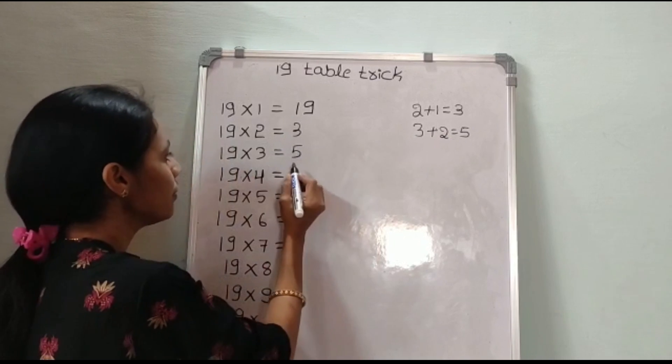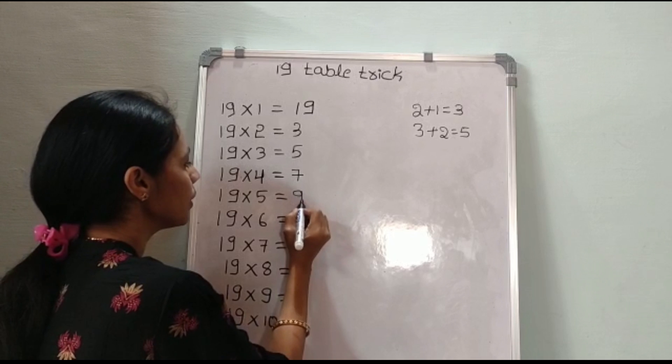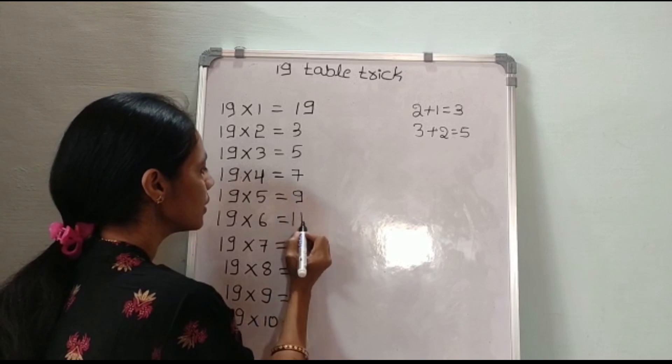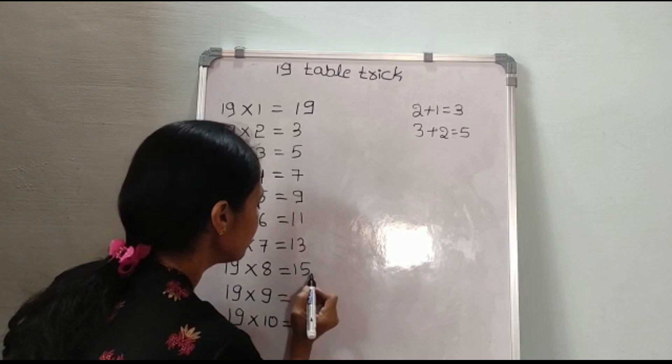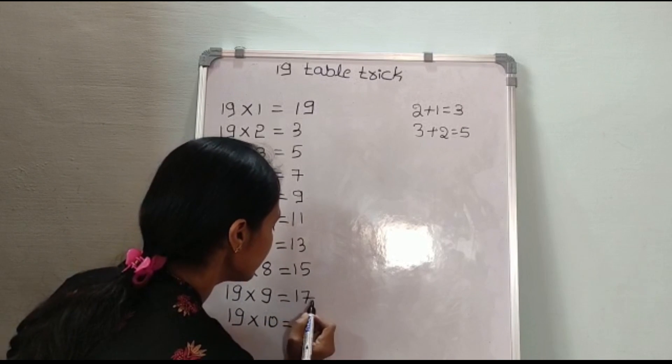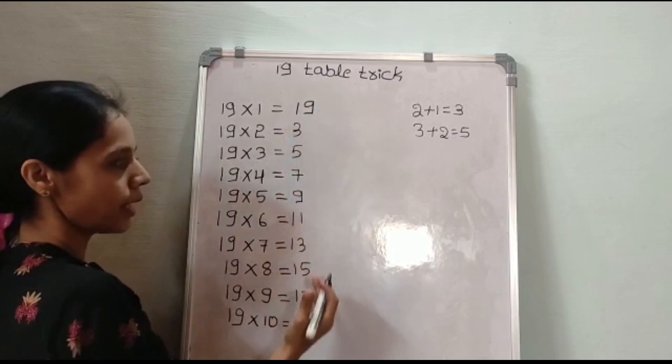So, next number is 5. Next number is 7, then 9, then 11, then 13, then 15, then 17, and next number is 19. Consider this side.